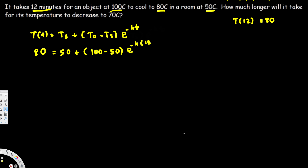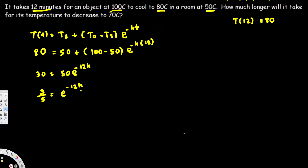Now let's simplify. Bringing 50 to the other side gives us 30 = 50 * e^(-12k). Dividing everything by 50, we get 3/5 = e^(-12k).